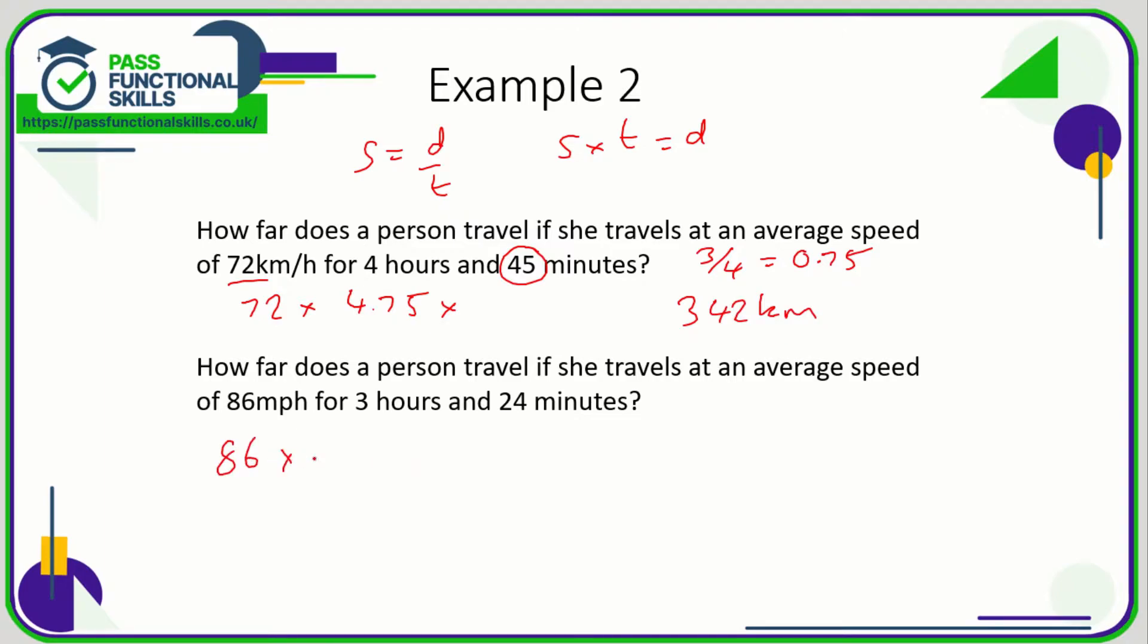Let's look at the next example. So it's going to be 86 multiplied by 3 point... okay, how do we deal with 24 minutes? Well, one hour is 60 minutes, so as a fraction of an hour, 24 minutes is 24/60. And if we type into our calculator 24 divided by 60, because this line in a fraction means divide, 24 divided by 60 is 0.4, so this is 3.4 hours.